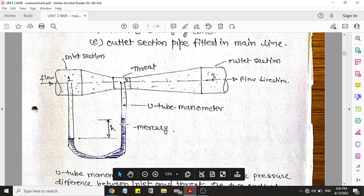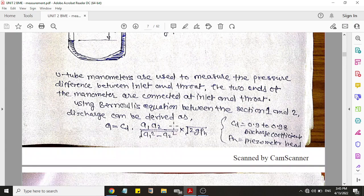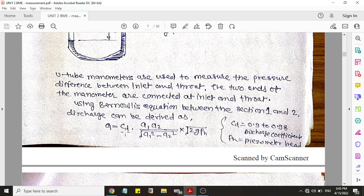You can see the height of mercury is increased on the second side, and you have to note down this H. And this is the formula of discharge: Q = CD × a1×a2 / √(a1²-a2²) × √(2g×ρg×H).